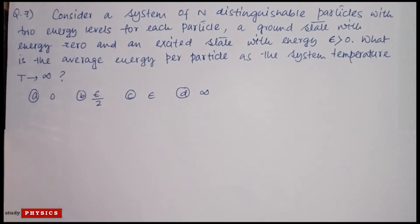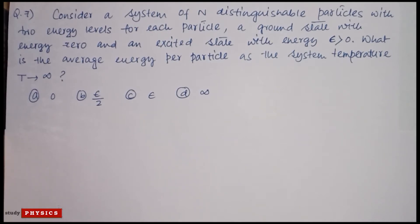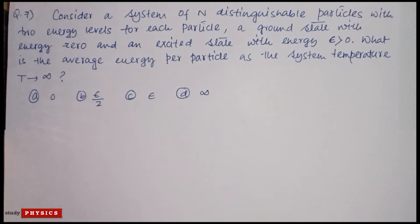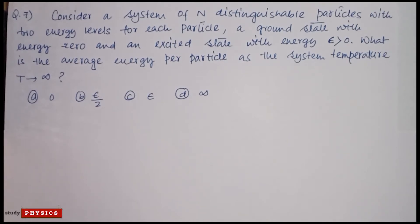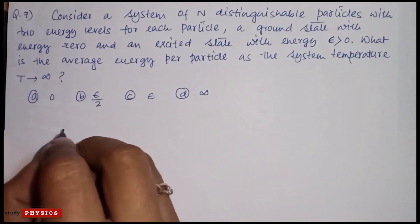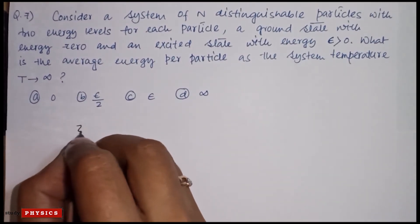Question number seven: consider a system of N distinguishable particles with two energy levels for each particle — a ground state with energy zero and an excited state with energy E greater than zero. What is the average energy per particle as the system temperature T tends to infinity? There are four options. We know that the partition function Z is the summation over states.